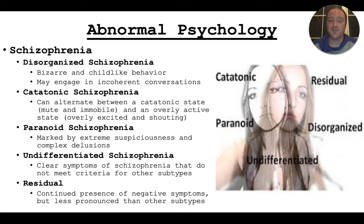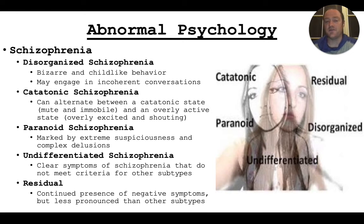Catatonic schizophrenia is when someone may alternate between a catatonic state — which is essentially being in a coma almost, but alive, so they're mute, immobile, and don't respond to anything — and then they switch to an overly active, manic state, which is the opposite of the catatonic state. It can alternate between those two and become a very serious issue.